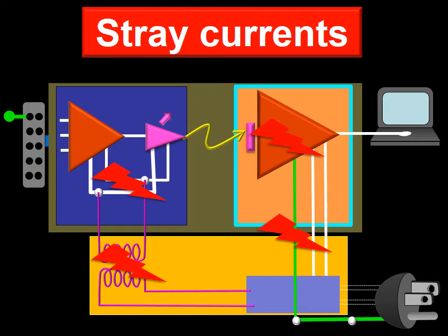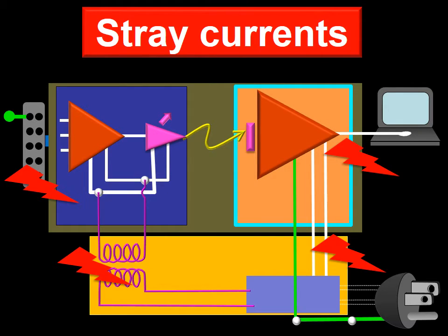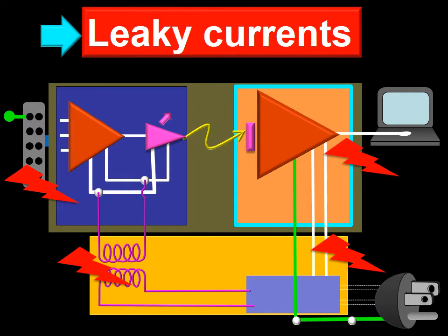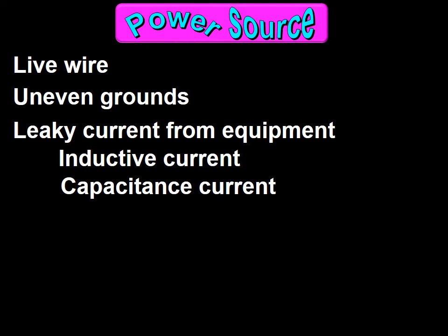So far I have used the term stray current to refer to the unintended currents generated by electricity. But since these currents are not confined to the structures generating them and are often found beyond the confines of the equipment, the term leaky current is often used to refer to them. So we have just finished discussing leaky currents from equipment as a power source.